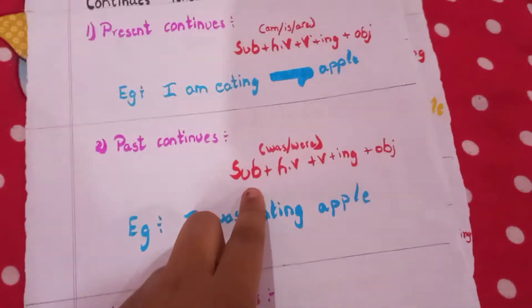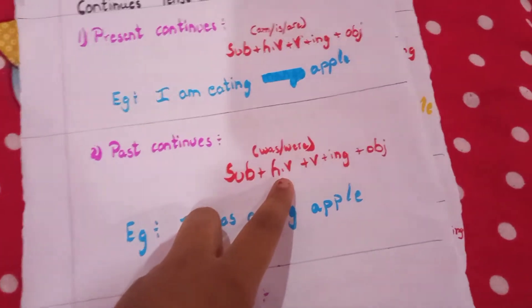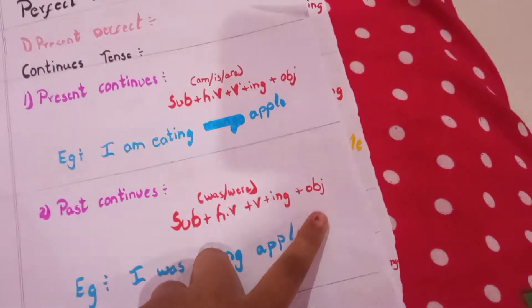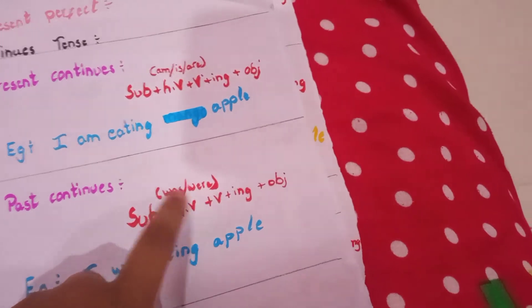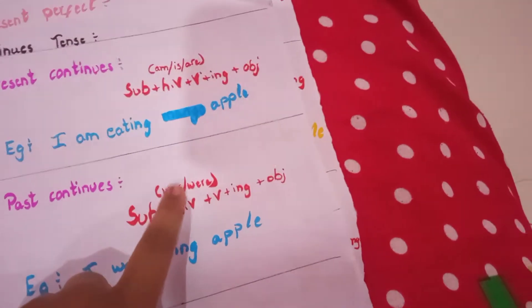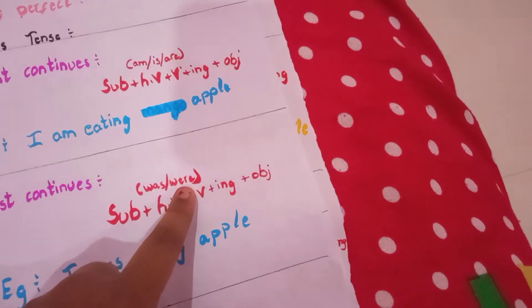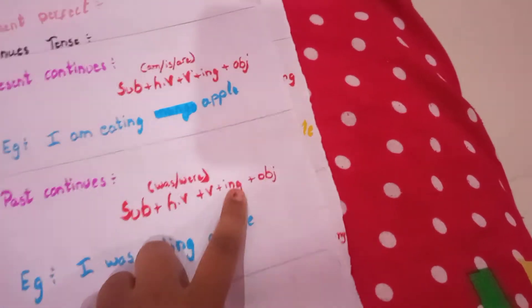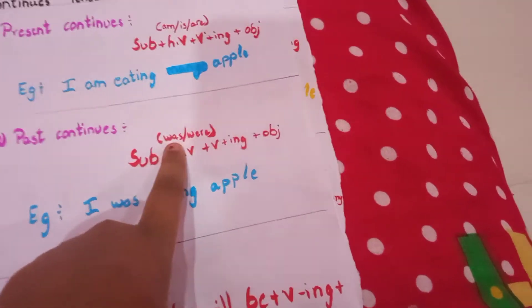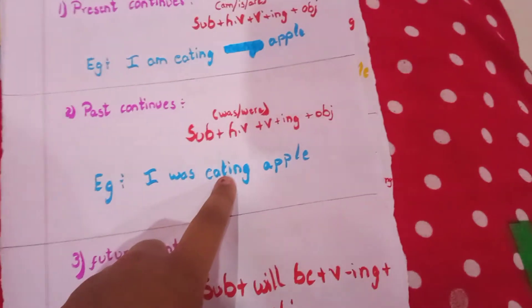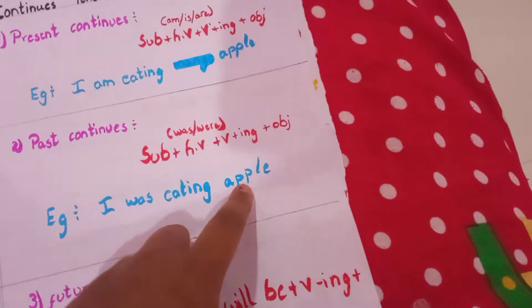Past continuous: subject plus helping verb plus V4 plus object. The helping verbs are 'was' and 'were'. 'Was' is used with he, she, it; 'were' is used with you, we, they. V4 means adding '-ing' to the verb. Example: 'I was eating apple.' 'I' is the subject, 'was' is the helping verb, 'eating' is V4, and 'apple' is the object.